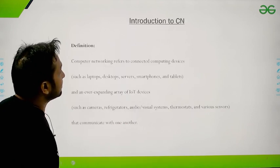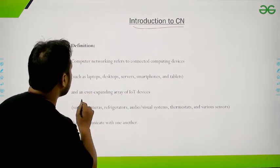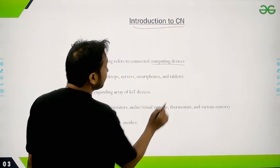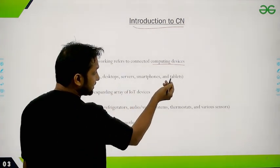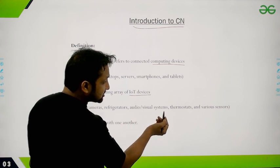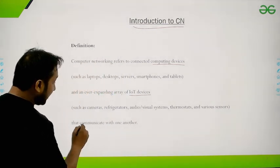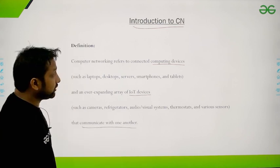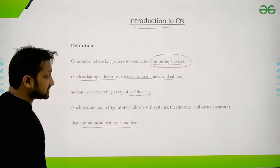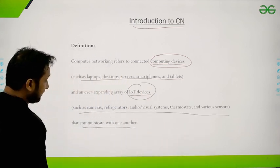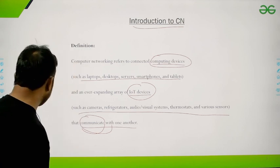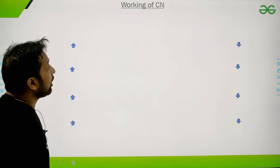Let's start with the introduction to computer networks. The definition: a computer network refers to connected computing devices — for example, laptops, desktops, servers, smartphones, tablets — and an ever-expanding array of IoT devices such as cameras, refrigerators, audio-visual systems, thermostats, and various sensors that communicate with each other. So a computer network is a combination of computing devices and IoT devices that are communicating with each other.